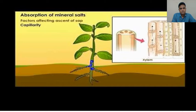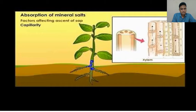Salts are absorbed in the form of ions. For example, potassium nitrate is absorbed in the form of K+ and NO3-. Movement of ions takes place from higher concentration to lower concentration. If absorption takes place according to the concentration gradient, it is called passive absorption. But if the concentration of a particular mineral is higher inside the cell sap and the same ion is still needed, then absorption takes place against the concentration gradient — this type of absorption needs energy and is called active absorption.